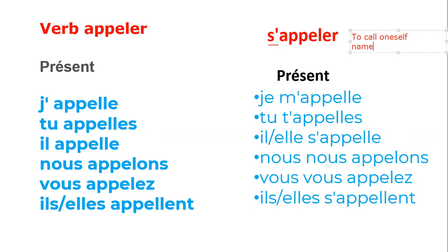So here we use the pronominal verb 's'appeler'. But verb 'appeler' means to call someone else — like to call a taxi, to call mother, or to call a doctor. So that is the 'appeler' verb.